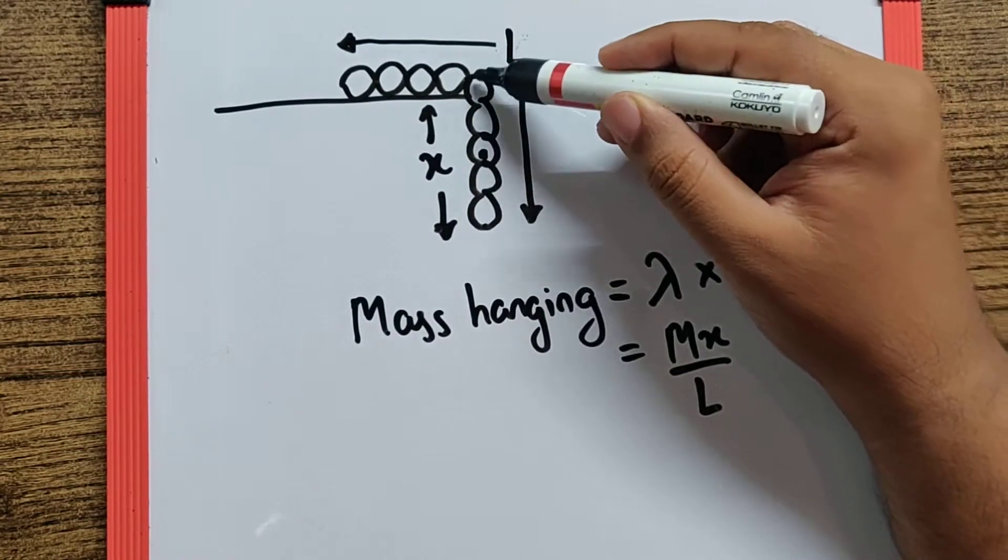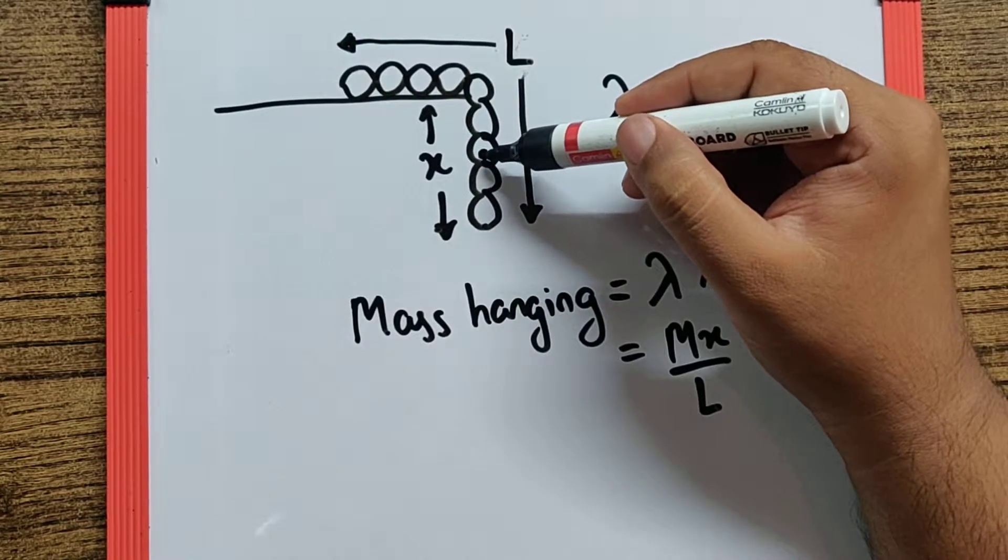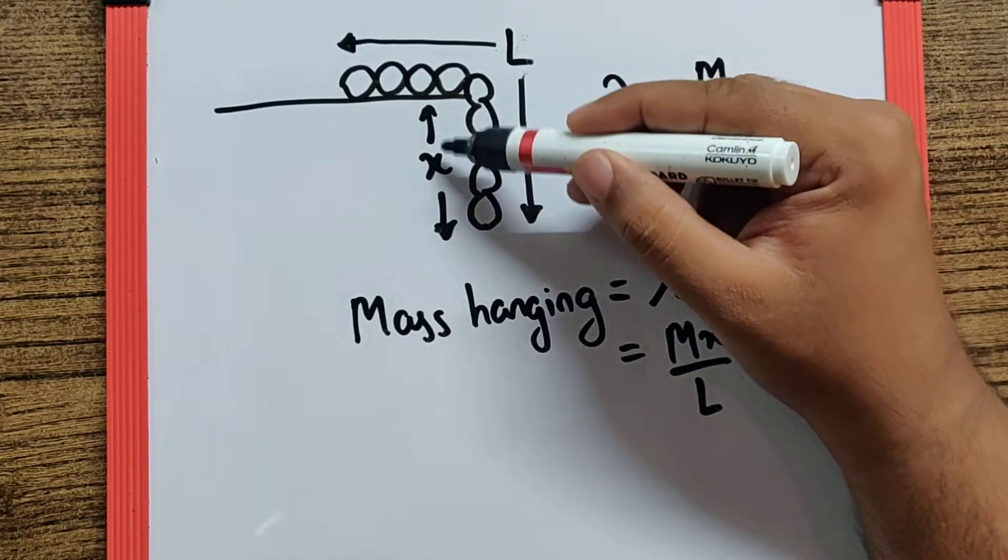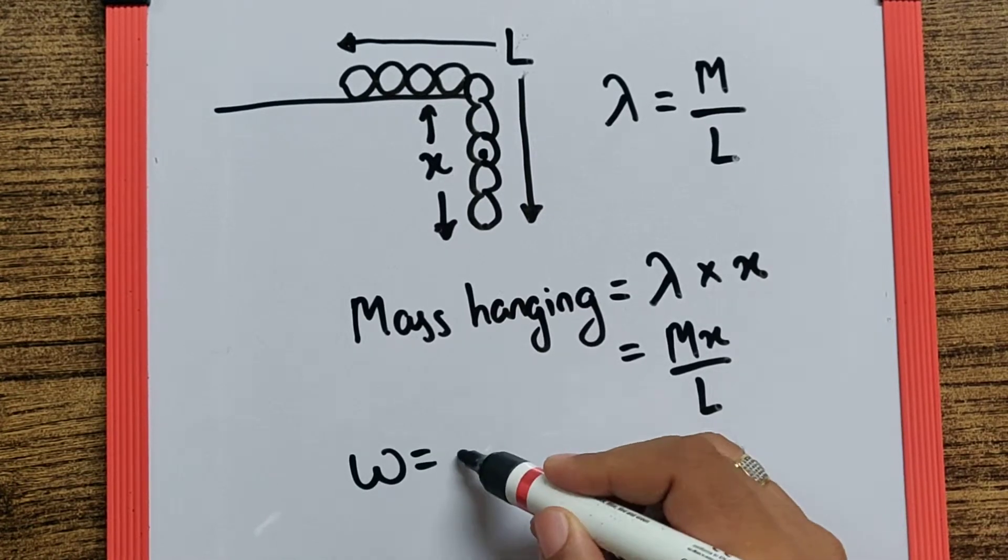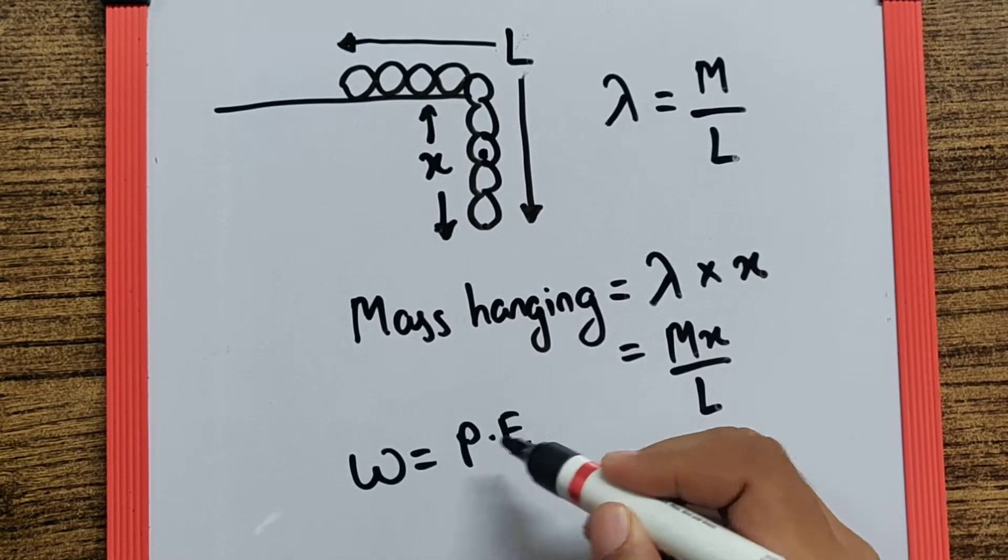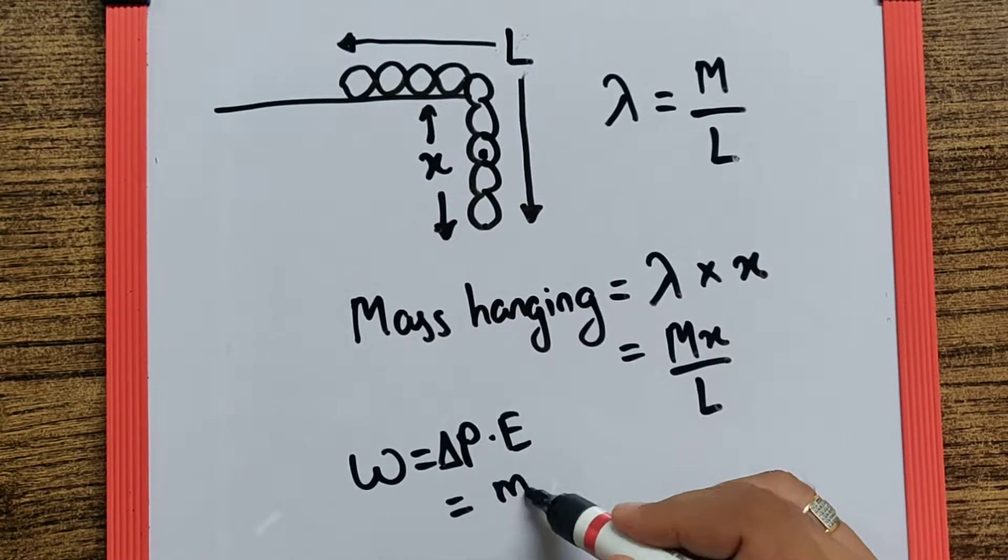So I can say the entire mass which is MX by L is concentrated at this point and it is raised by a height X by 2. That makes the work done as the potential energy change which is the general equation MGH.